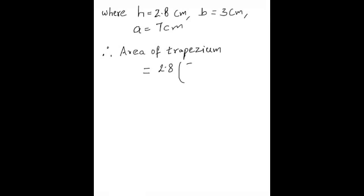So 2.8 times (7 plus 3) gives you 10. 10 divided by 2 gives you 5. 2.8 times 5 gives you 14 centimeters squared because of area - the units of area is centimeter squared.